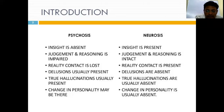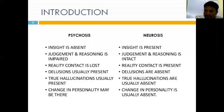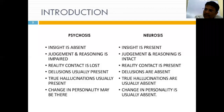Delusions are defined as false, fixed, unshakable beliefs that are outside the cultural and social background of the person. Even when family members tell him it is not possible, he won't listen. Hallucinations are false perceptions in the absence of external stimuli. These are the key features of psychosis.